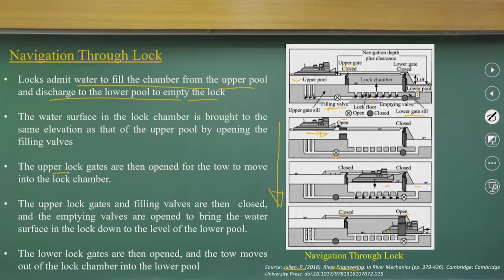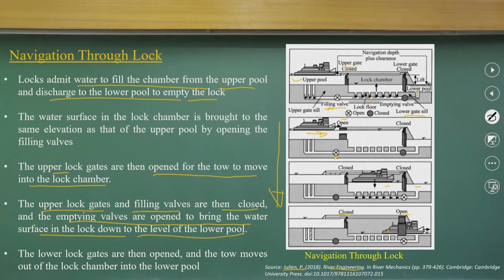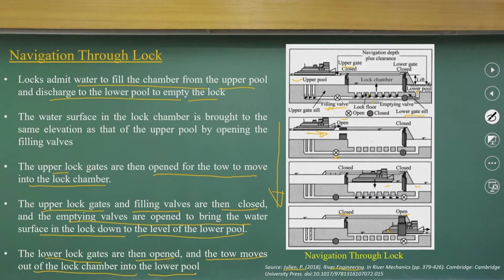This describes a typical navigational lock arrangement — a mechanical system where the lock admits water to fill the chambers from the upper pool and discharges to the lower pool to empty. The upper lock gates open for the vessel to move into the lock chambers; the upper lock gates and filling valves are then closed; the emptying valves open to bring the water surface down to the lower pool level; and then the lower lock gates open for the vessel to move out into the lower pool.